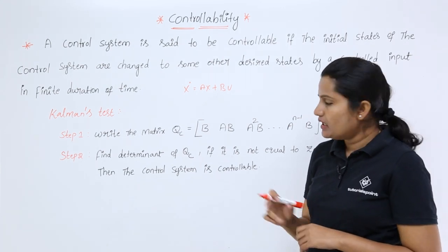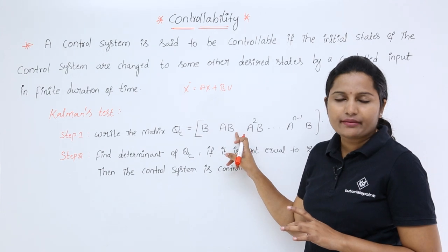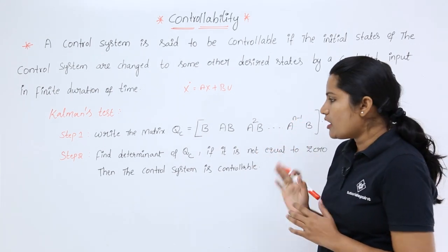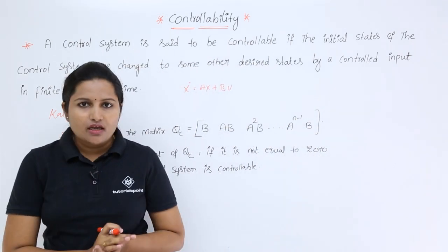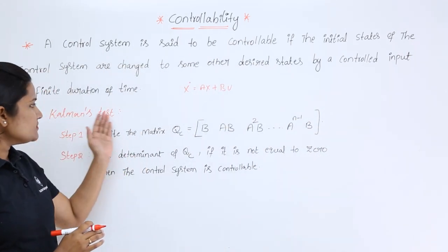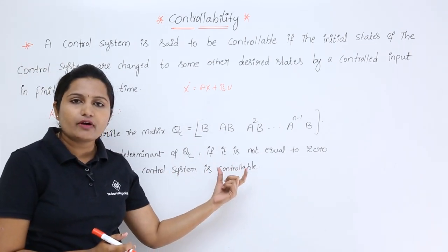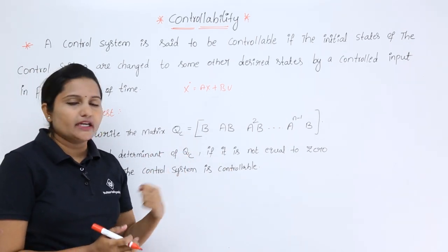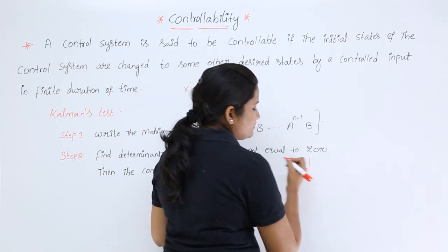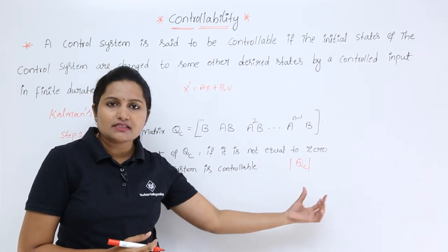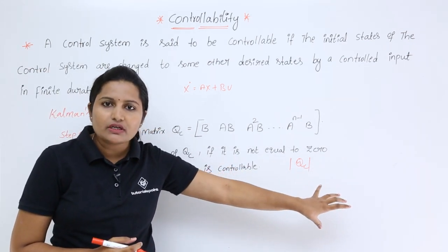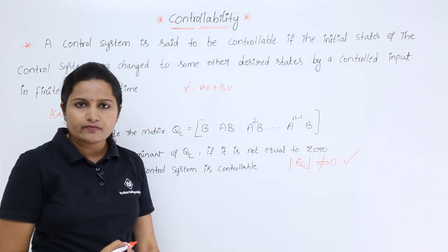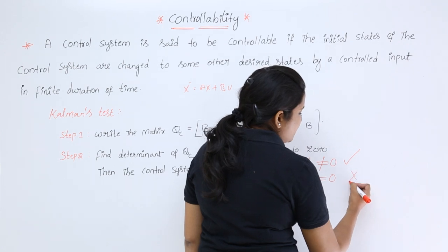Matrix A is always N×N and B is an N×1 matrix. The matrix order gives you the value of N. The second step in Kalman's test is taking the determinant of the found matrix QC. We need to find the determinant — modulus of QC, computed as AD minus BC. If this value is not equal to zero, the system is said to be controllable. If it is equal to zero, we cannot control the system.